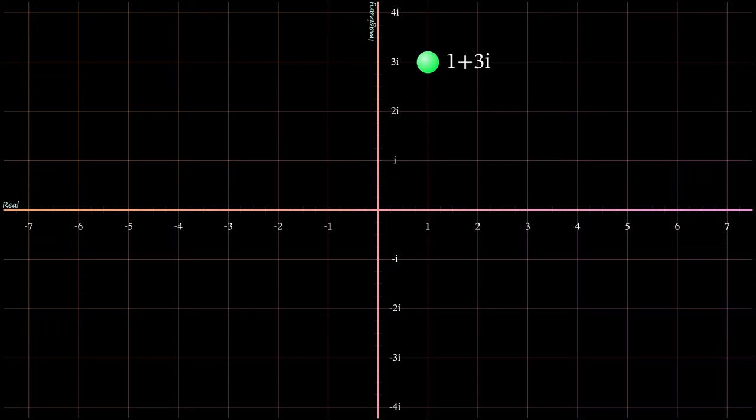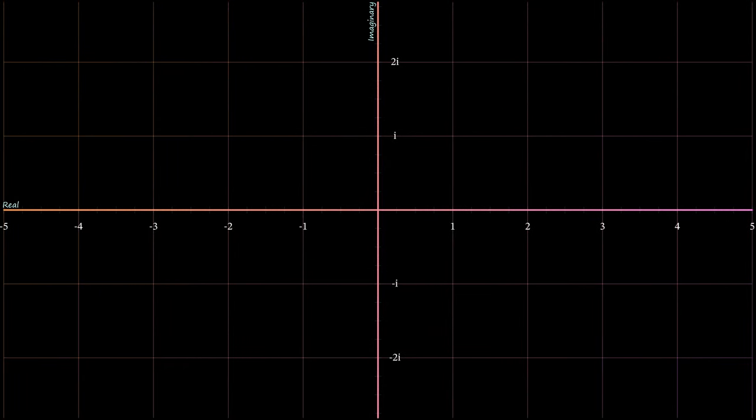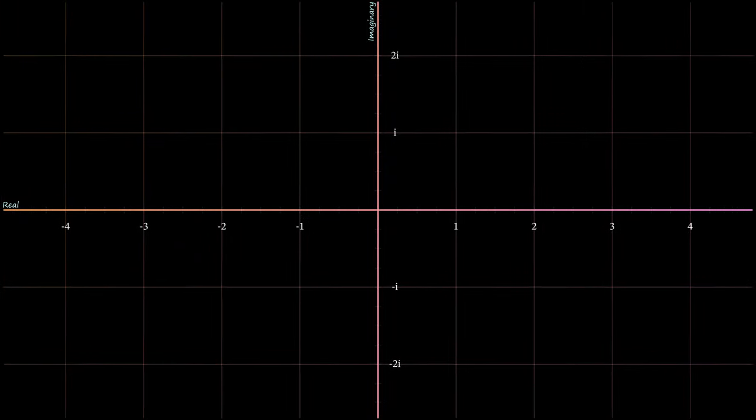Soon we will start to look at functions of complex numbers, which is a subject known as complex analysis. The number i is located here on the vertical axis. Negative i is located here below the real axis. i squared or negative 1 is of course located on the real axis. Now let's start thinking visually.